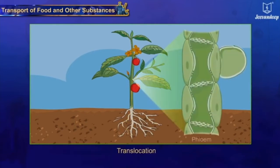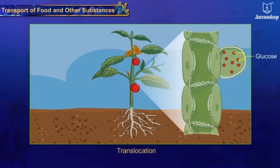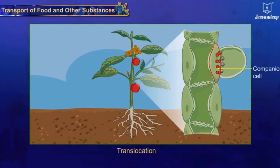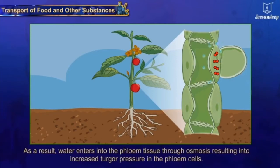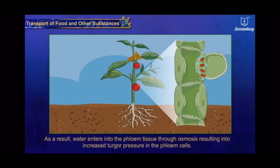Translocation takes place through phloem flow in both upward and downward directions. Food that is glucose synthesized by cells in the green leaves is converted into sucrose and actively transported into the companion cells of the leaf, through the nearest phloem tissue with the expenditure of energy from ATP. This causes a decrease in the concentration of water molecules in that area, and as a result, water enters into the phloem by osmosis, resulting in increased turgor pressure in the phloem cells.